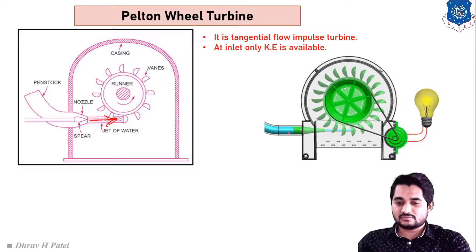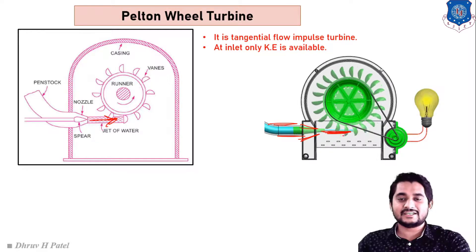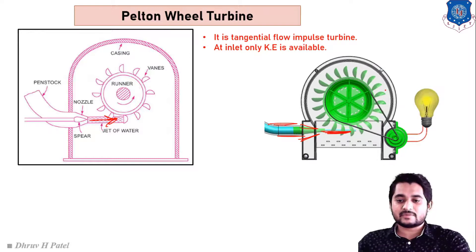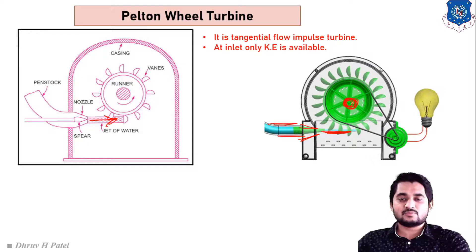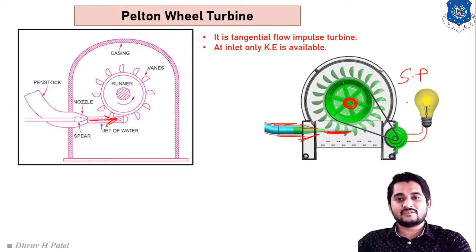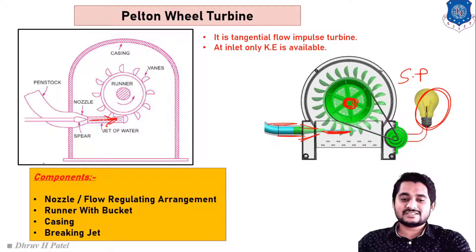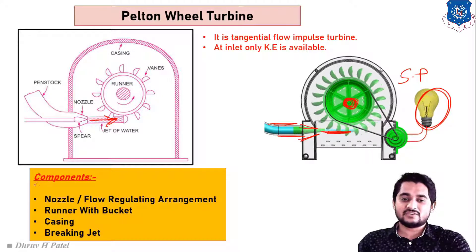From the penstock, water comes to the nozzle, and the jet of water attacks on the blades of the turbine, causing it to rotate. When the turbine rotates, the shaft rotates and we get shaft power as output. From the shaft power we can rotate a generator and generate electricity.